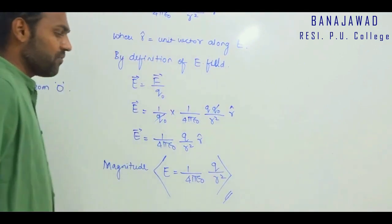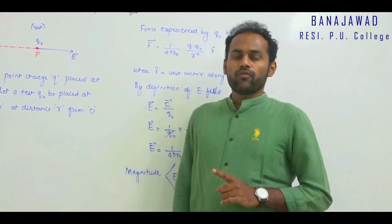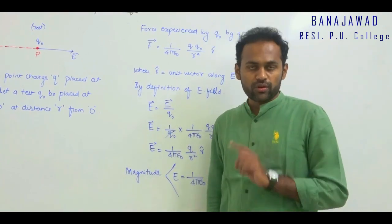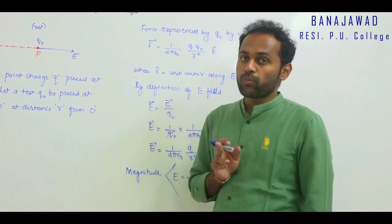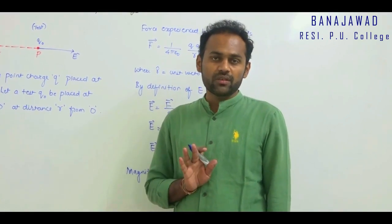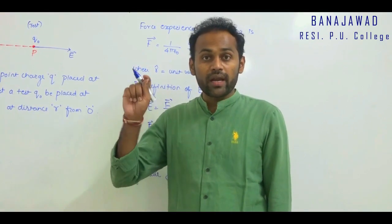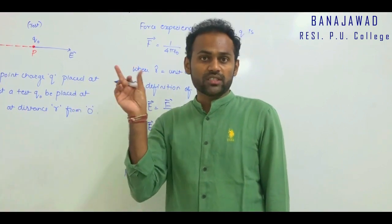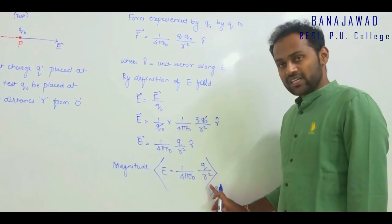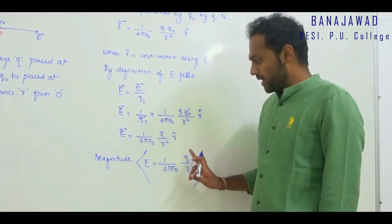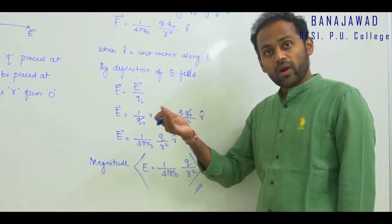Till now we used Coulomb's formula for force between two charges Q1 and Q2: F = (1/4πε₀)(Q1 × Q2) / R². Clearly remember the difference between the two expressions so you will not get confused. The force between two point charges involves Q1 × Q2, whereas the electric field due to a point charge is E = (1/4πε₀)(Q / R²) — here there is only one charge Q, not Q1 × Q2. Please don't get confused between these two.